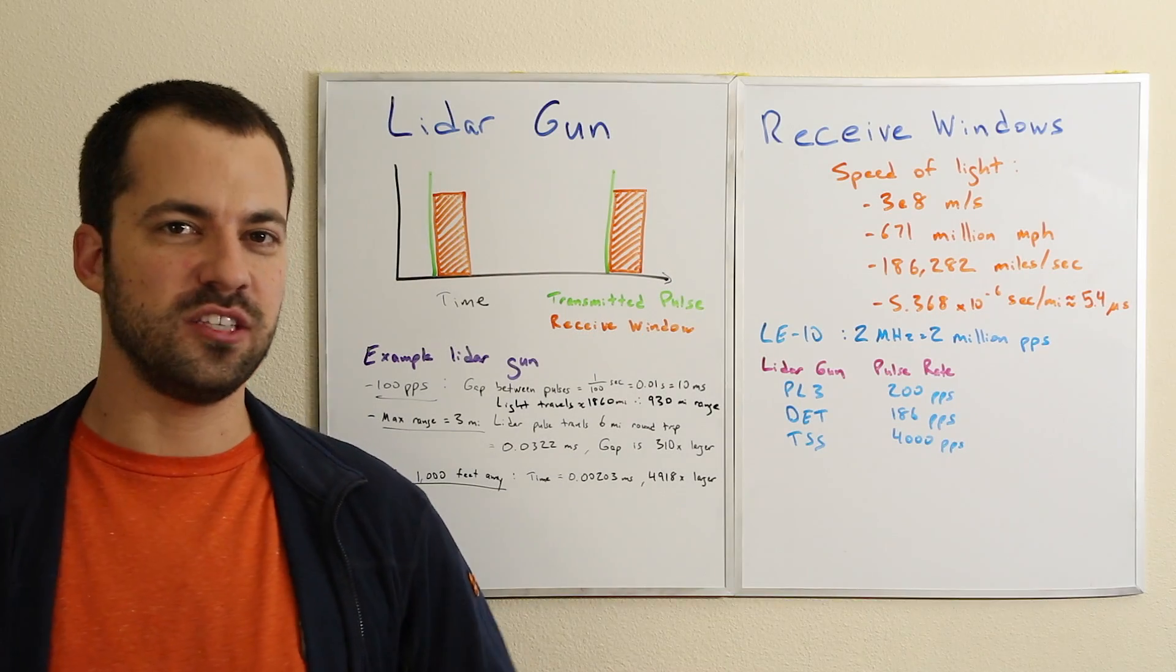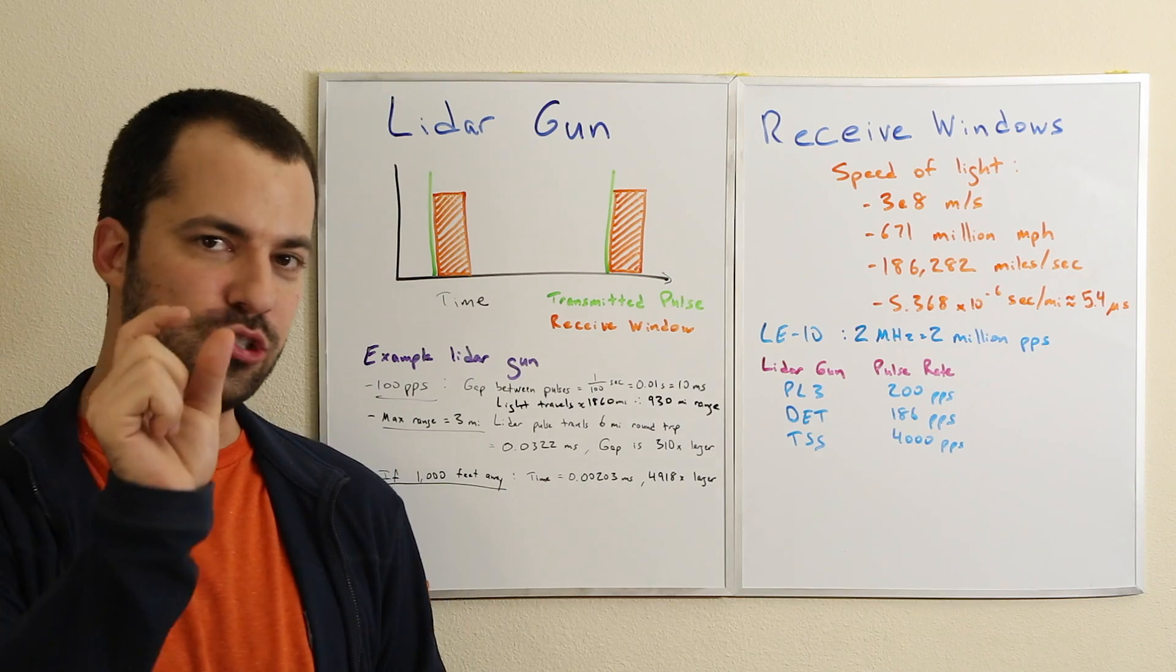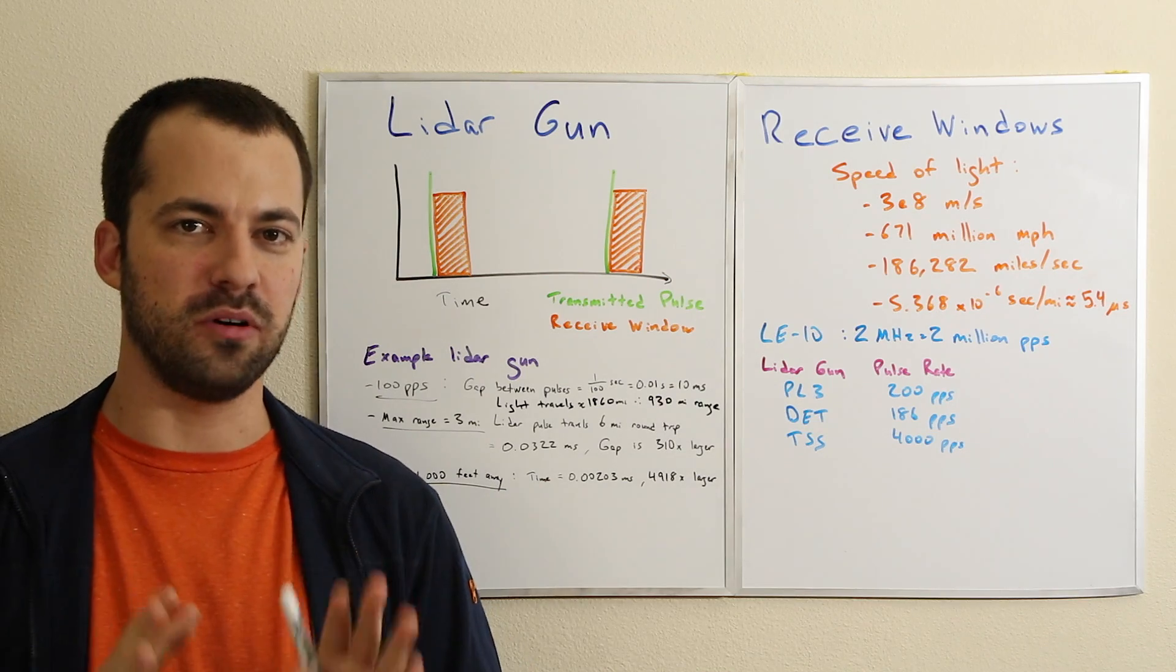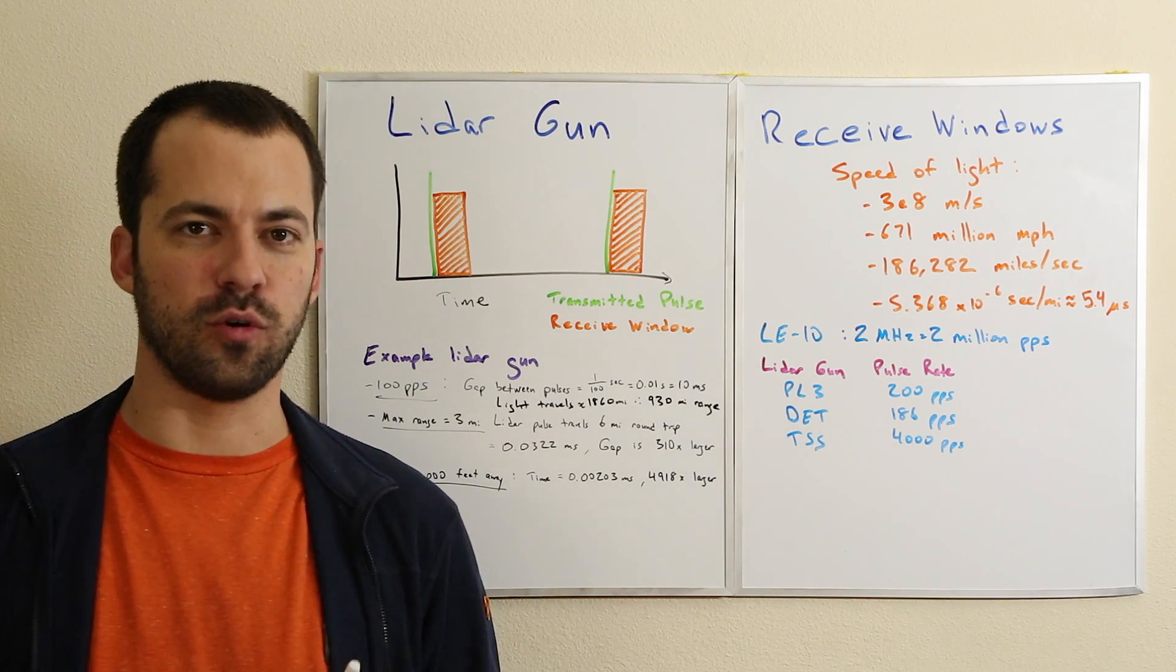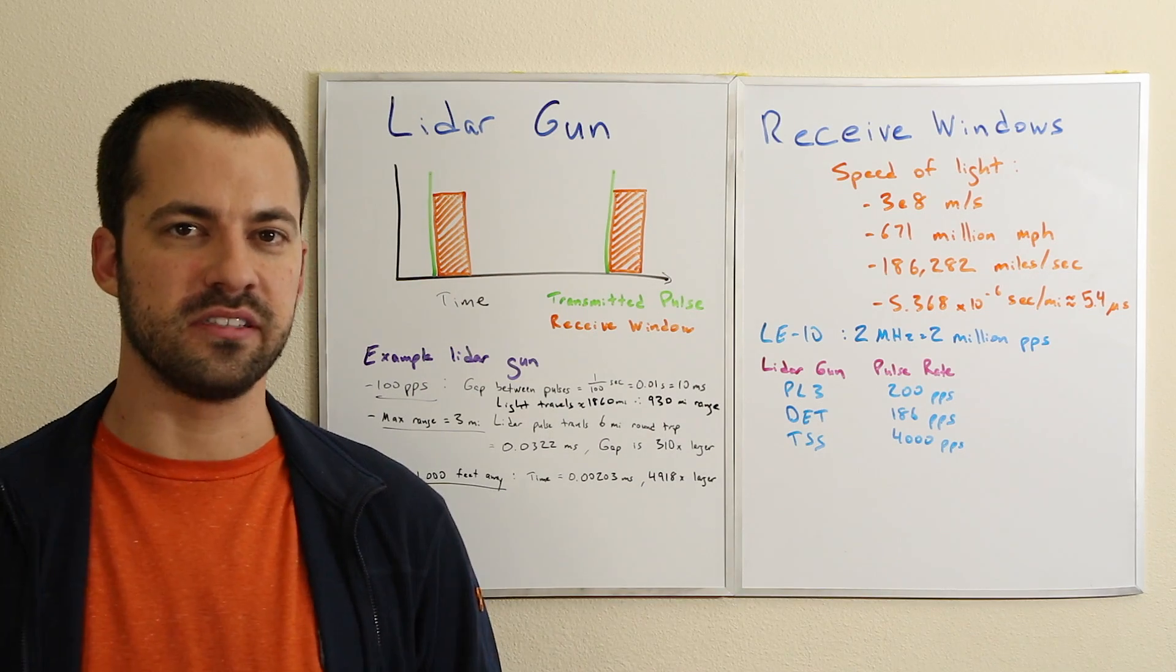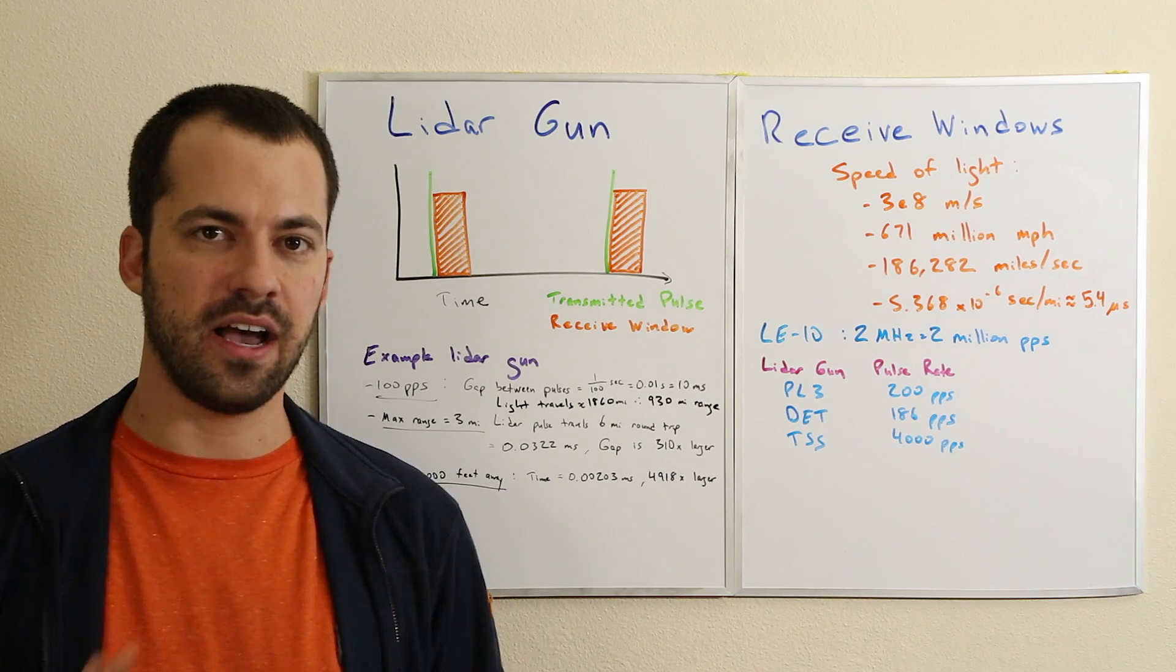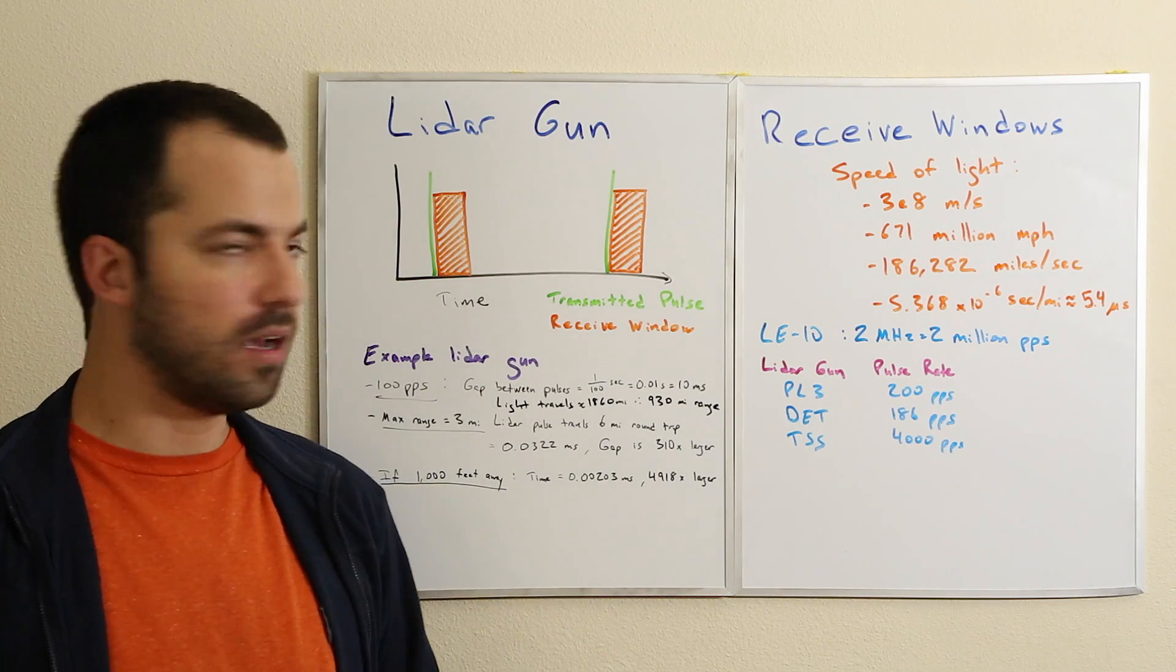Hey what's up guys, in this video I want to talk about lidar gun receive windows, which are the short periods of time in between pulses where it's actually looking for a legitimate reflection and return signal back from its transmitted pulses. Lidar guns are not actually looking for reflections the entire time.